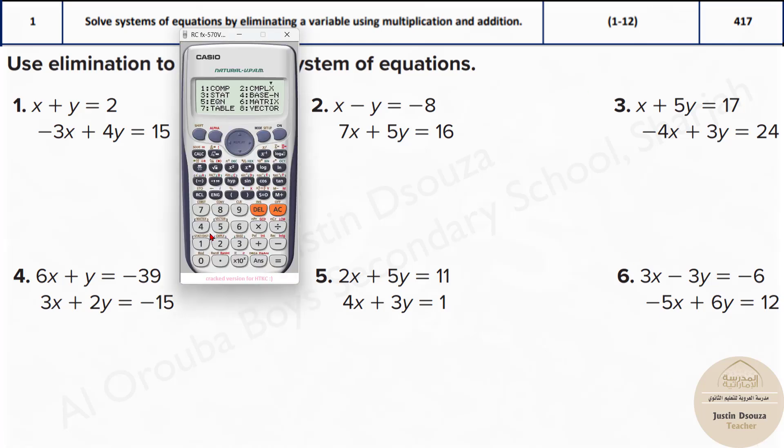All you need to do is press mode, phi, and the first option gives you simultaneous equations to solve two equations. Press 1, the first option. Before pressing 1, you can see that the standard form is given: ax plus by equals c, where c is the constant, a is the coefficient of x, and b is the coefficient of y.